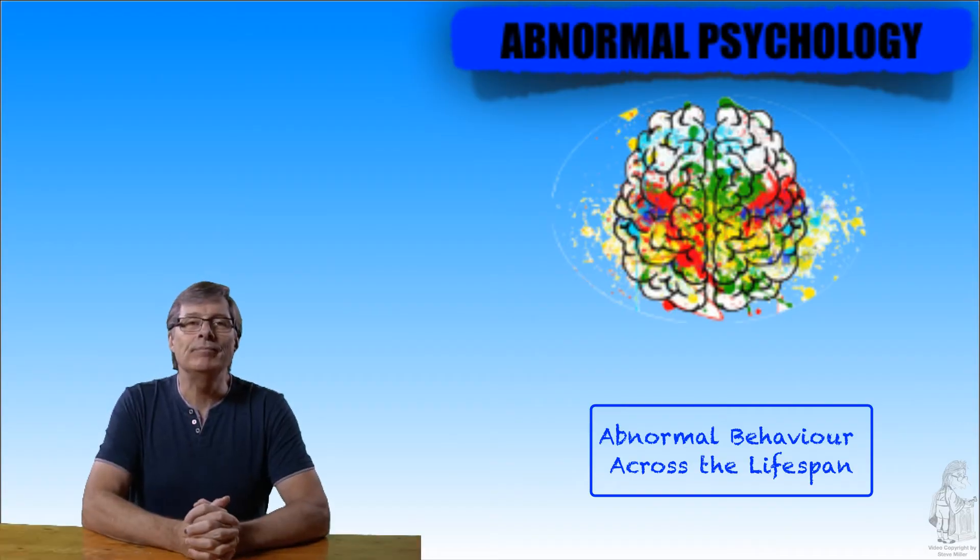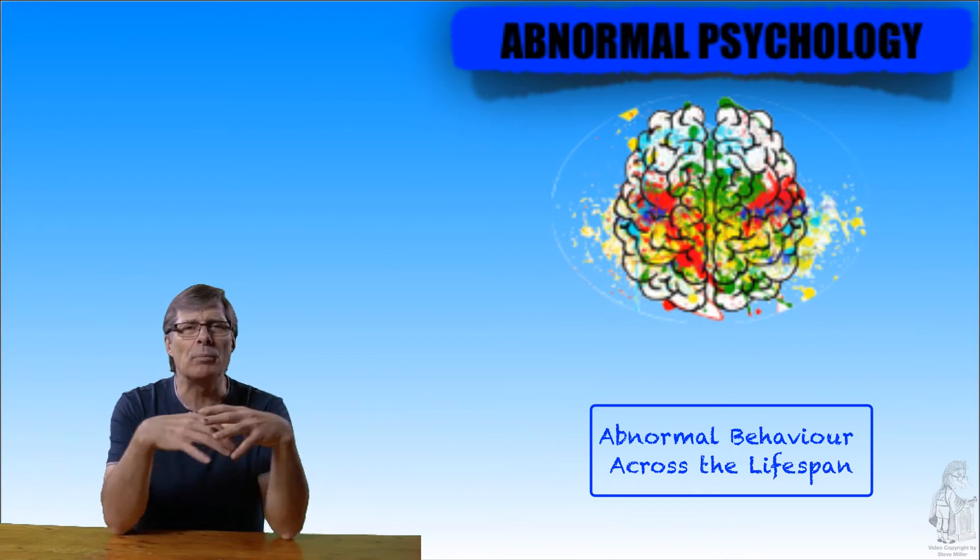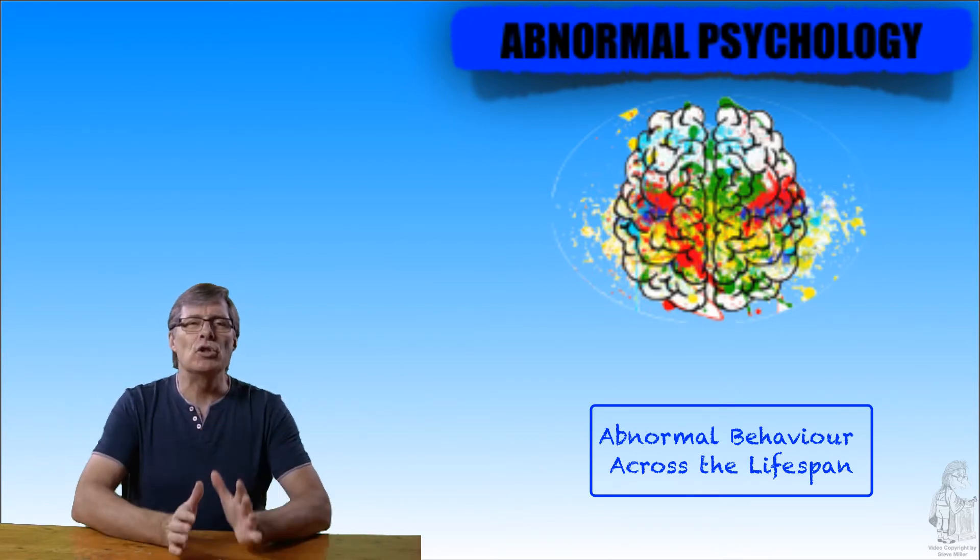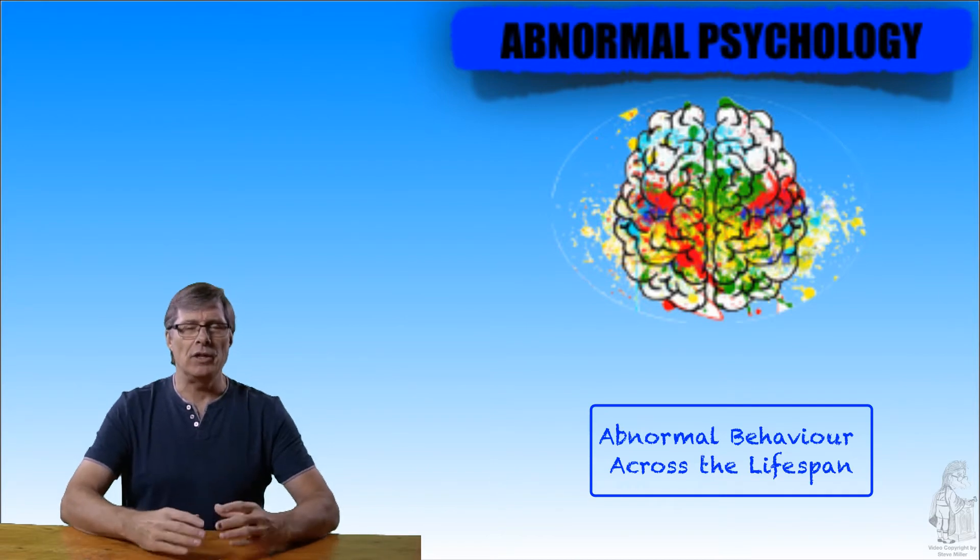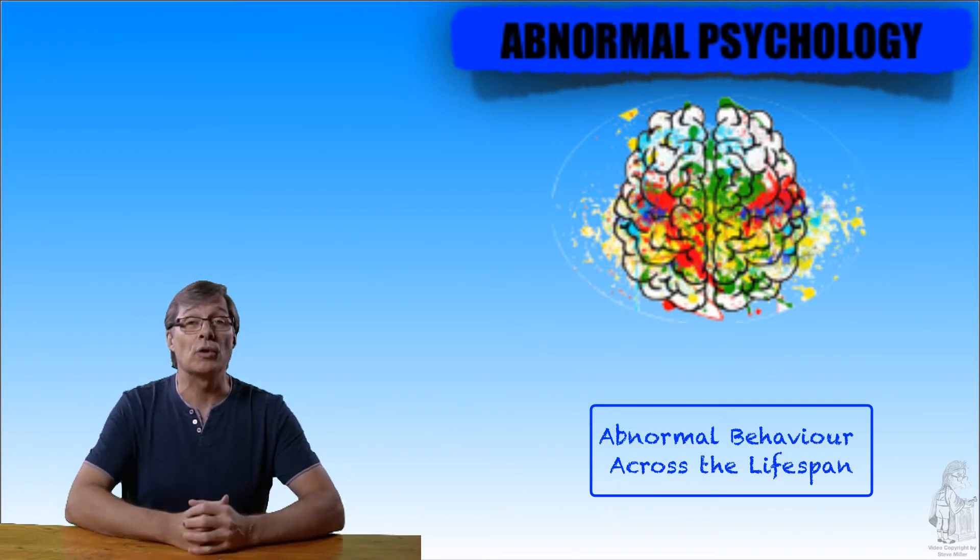Hi and welcome. We are now going to do the last chapter, chapter 11, where we're looking at abnormal behavior across a lifespan. This usually means things that people are born with and they live throughout their life with the same sort of disorder.